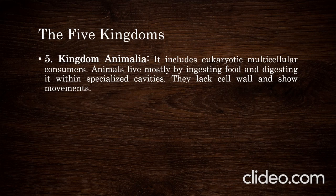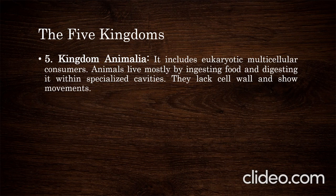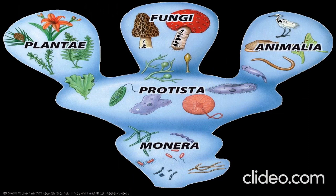Kingdom Plantae includes eukaryotic multicellular photosynthetic organisms. Kingdom Animalia includes eukaryotic multicellular organisms — animals live mostly by ingesting food and digesting it within specialized cavities. They lack cell walls and show movement. Scientists have agreed on these five kingdoms, and a detailed discussion of each kingdom can be obtained. In summary: Monera includes prokaryotes, Plantae includes all types of plants, Fungi includes organisms like mushrooms, and Protista includes Euglena, algae, and Amoeba.